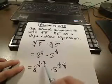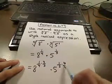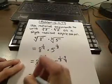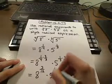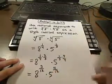So the 1 fourth is going to get multiplied by 3 over 3, and the 1 third is getting multiplied by 4 over 4. That gives me 8 to the 3 twelfths and 5 to the 4 twelfths.